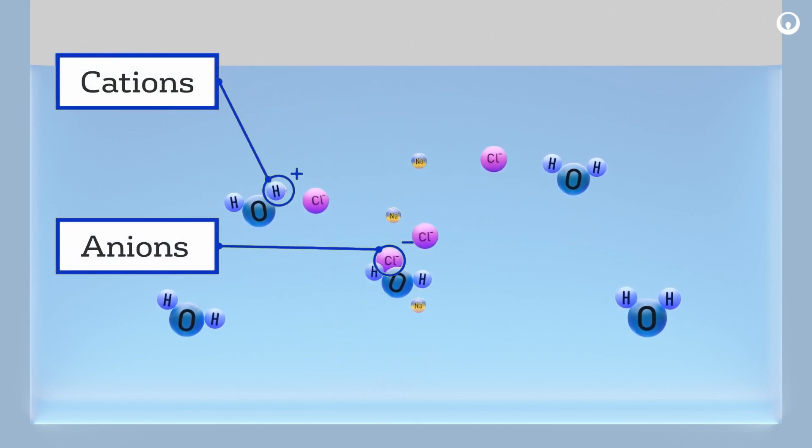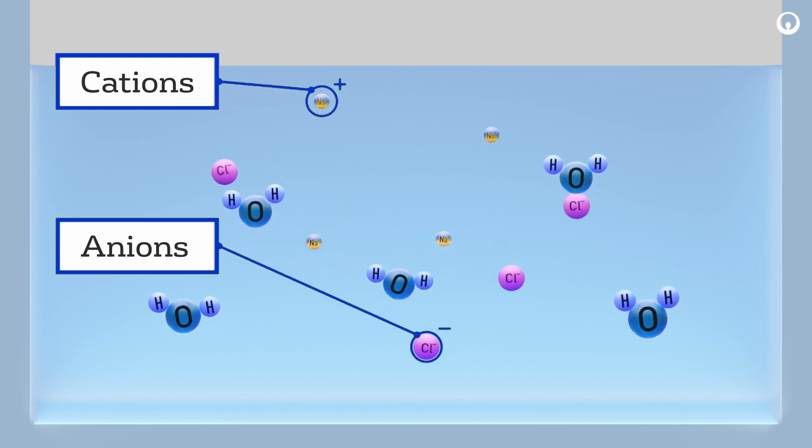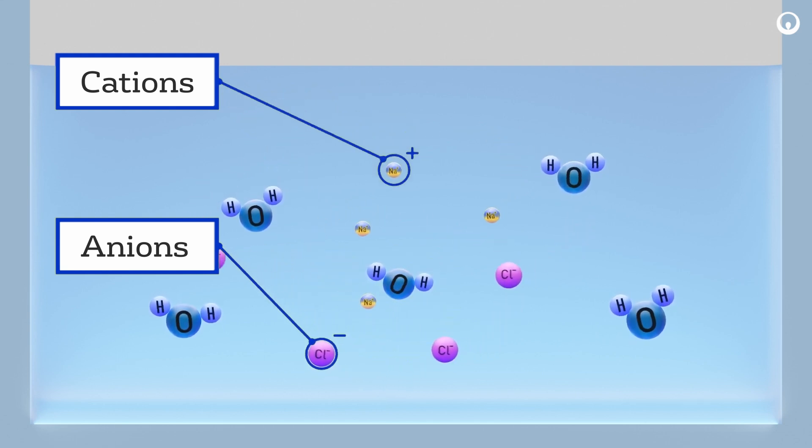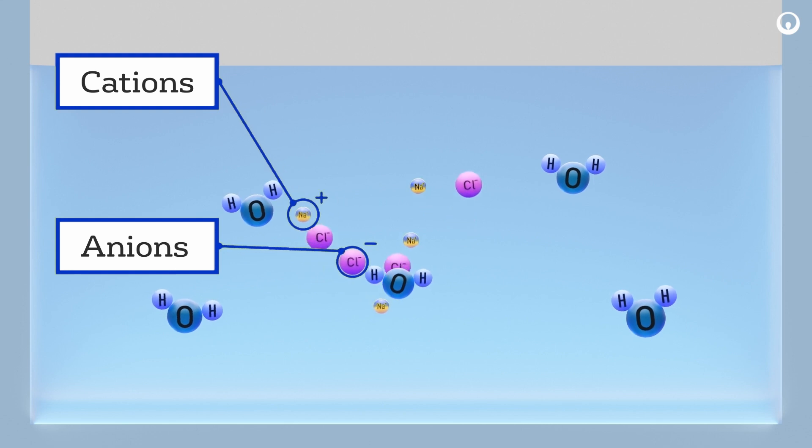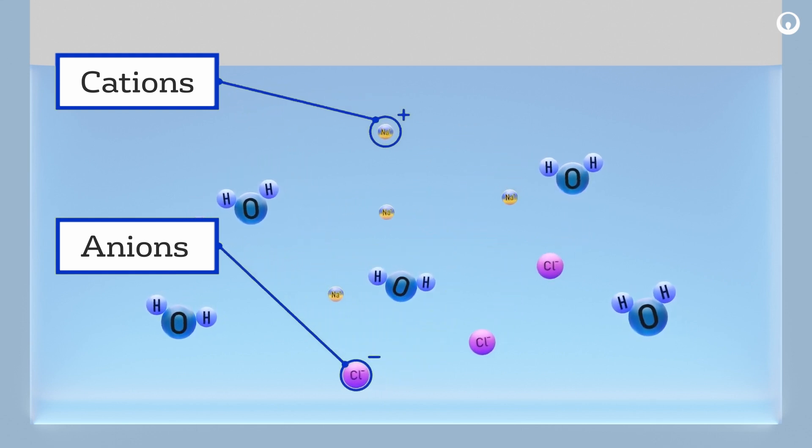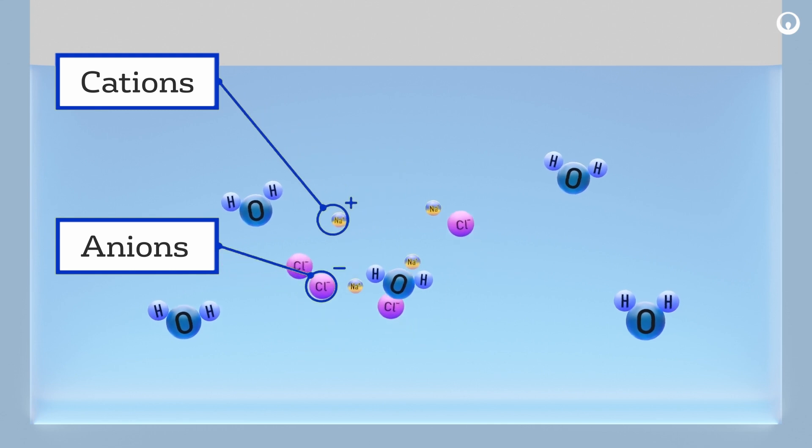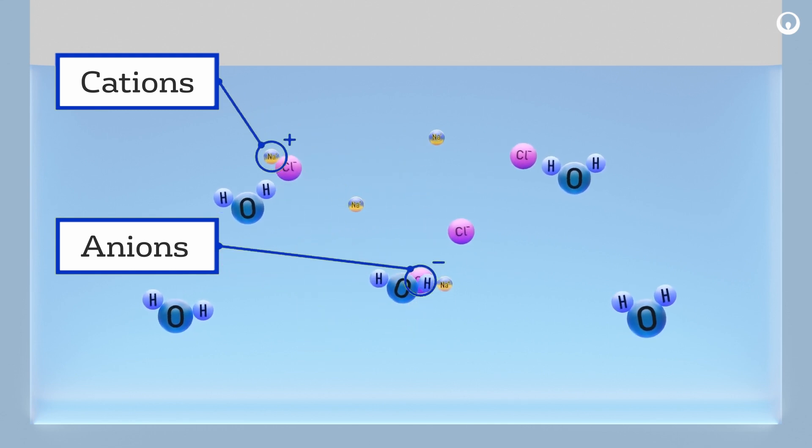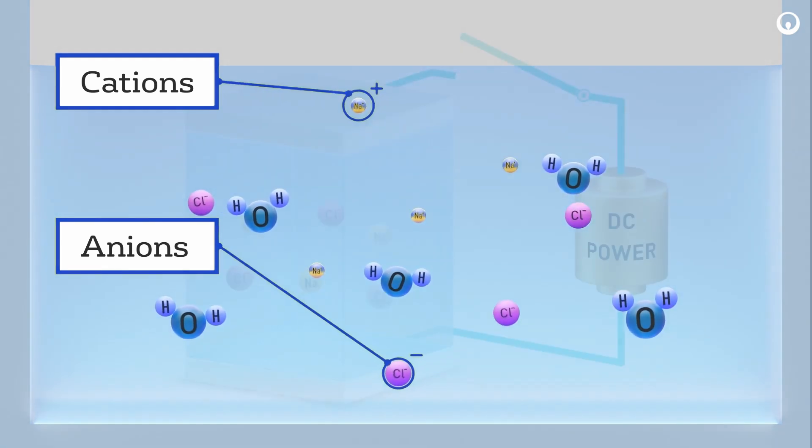These ions move freely through the water as individual atoms. Depending on the source of the water, the concentration of salts and minerals can be too high for drinking water, industrial use, or irrigation purposes, and it becomes necessary to remove the salt. The process of removing salts from water is called desalination.